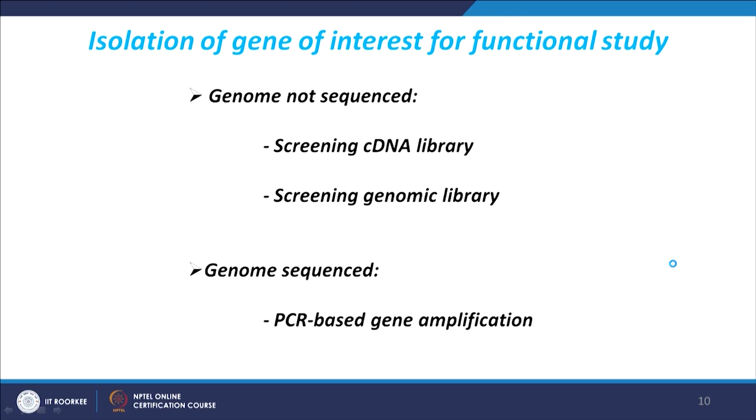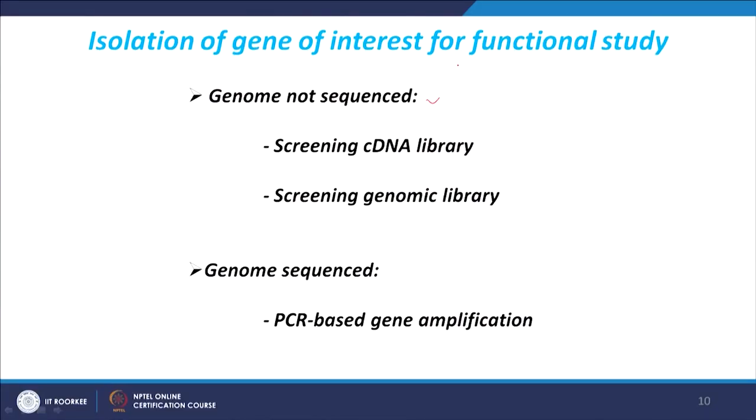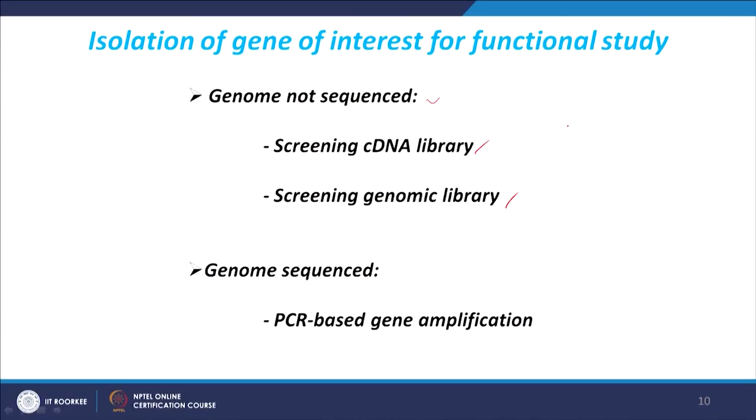Once you have defined a gene, the next question is how to isolate it. If the genome of your plant species is not sequenced, you cannot design a primer or do polymerase chain reaction. But if your genome is sequenced, it is relatively easy — you can design a specific primer, amplify by PCR. If the genome is not sequenced, one way of isolating a gene is using a cDNA library or genomic library.